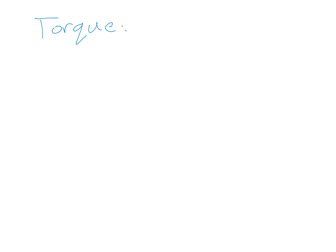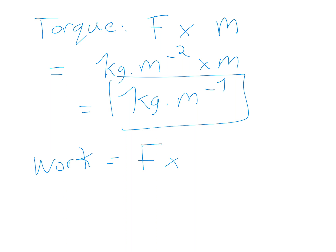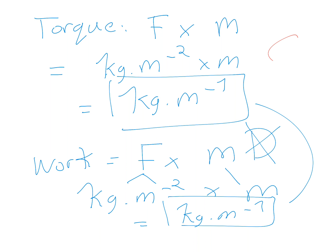Choice D is torque and work. Torque is one of the forces multiplied by the perpendicular distance between the two forces, giving kg m⁻² × m = kg m⁻¹. Work is force multiplied by distance in the direction of the force: kg m⁻² × m = kg m⁻¹. They are the same, so D is wrong. The correct answer is C.